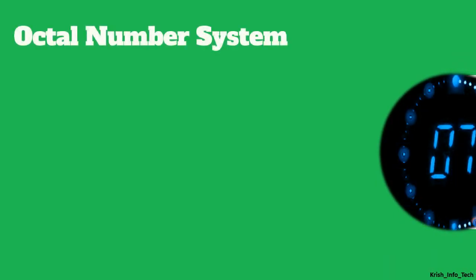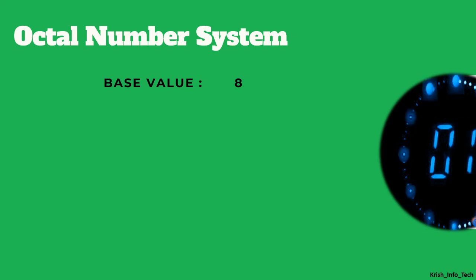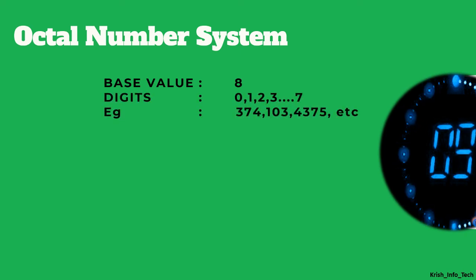Next, we are moving on to the octal number system. The base is 8. Start counting from 0: 0, 1, 2, 3, 4, 5, 6, 7. So the digits are 0 to 7. An octal number should have digits only up to 7.